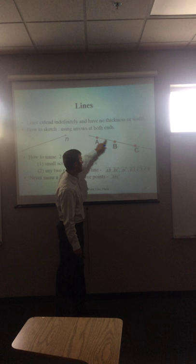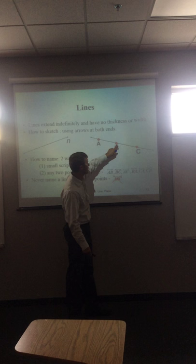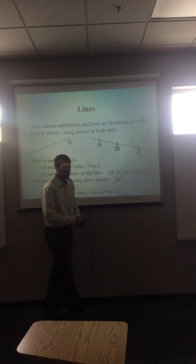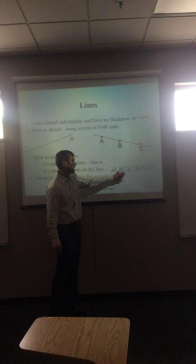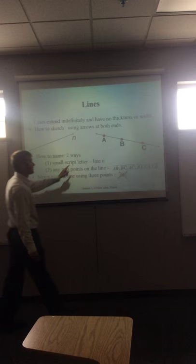So here we can label this line AB, we can label it BC, we can label it AC, we can label it BA, we can label it CA, or you could go CB. So there's really a number of ways in which we can label it. Biggest thing to point out, we don't label a line with three. It's just two points make up the line.